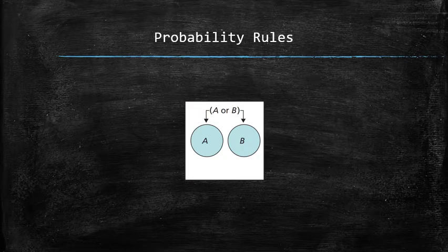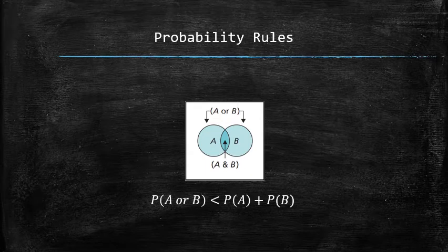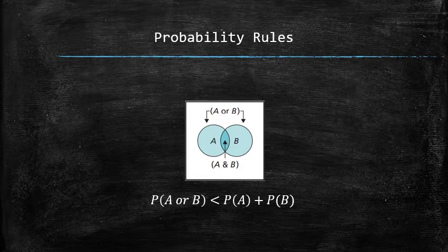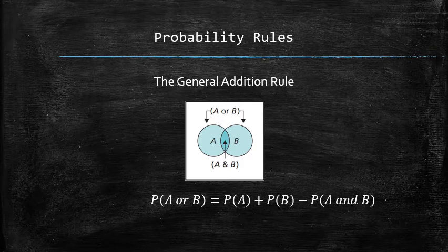Next, consider the union of two events A and B that are not necessarily mutually exclusive, as shown on the Venn diagram. The special addition rule doesn't work in this case because the combined area of A and B exceeds the area of the union. The area of A ∪ B equals the sum of the areas of A and B minus the area of their intersection. In other words, P(A or B) = P(A) + P(B) − P(A ∩ B). This is called the general addition rule, and it applies regardless of whether events are mutually exclusive or not.